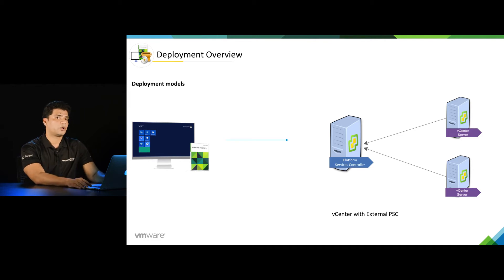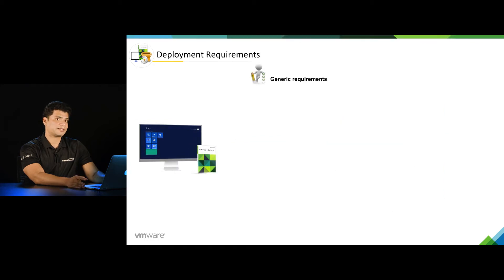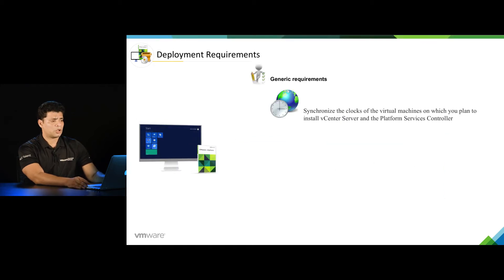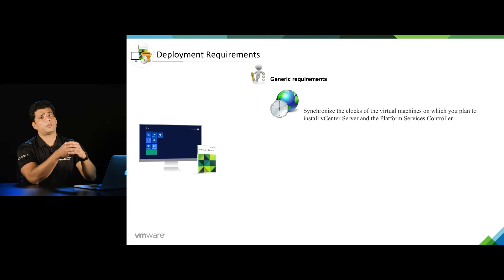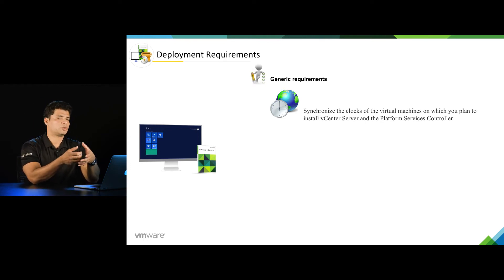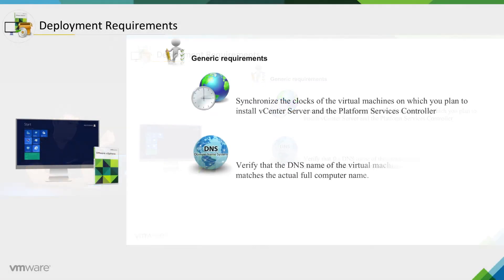Now that we understand what a deployment model is, let's move on to the next item: deployment requirements. You need to make sure that you synchronize the clock of the virtual machine on which you want to install vCenter Server. You also need to make sure that you have correctly set up DNS for that virtual machine.